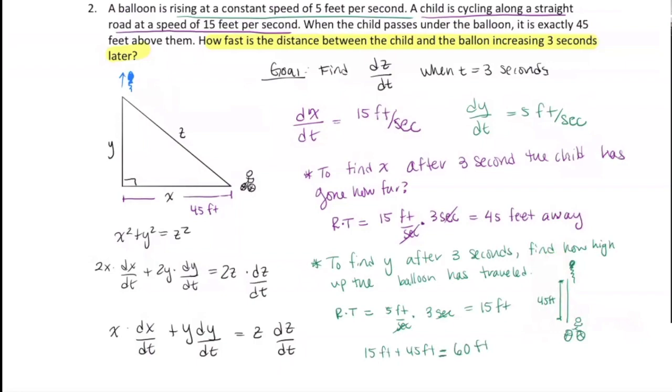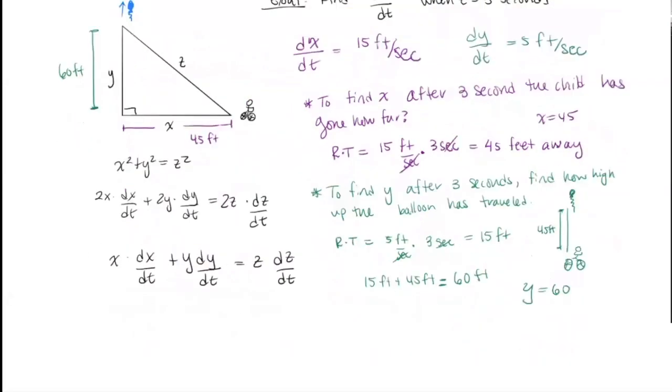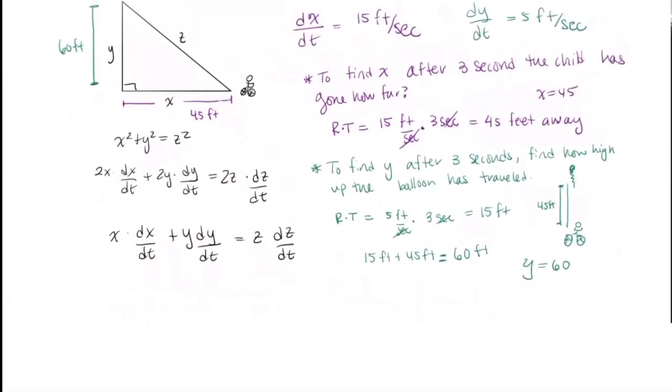So now I know that X is 45, and Y is 60. So let me put this here. Finally, let's find what Z is. And now I'm going to hide this upper portion, since I think we've used this information as much as we can, and we need more space.